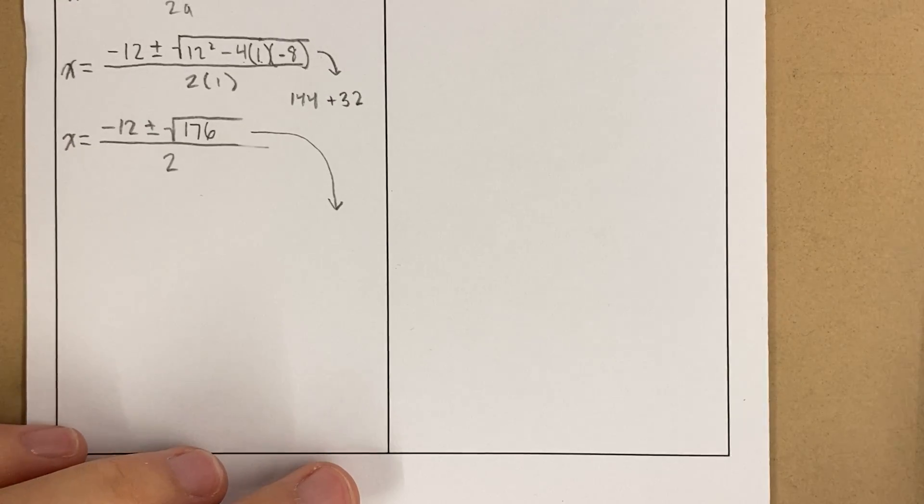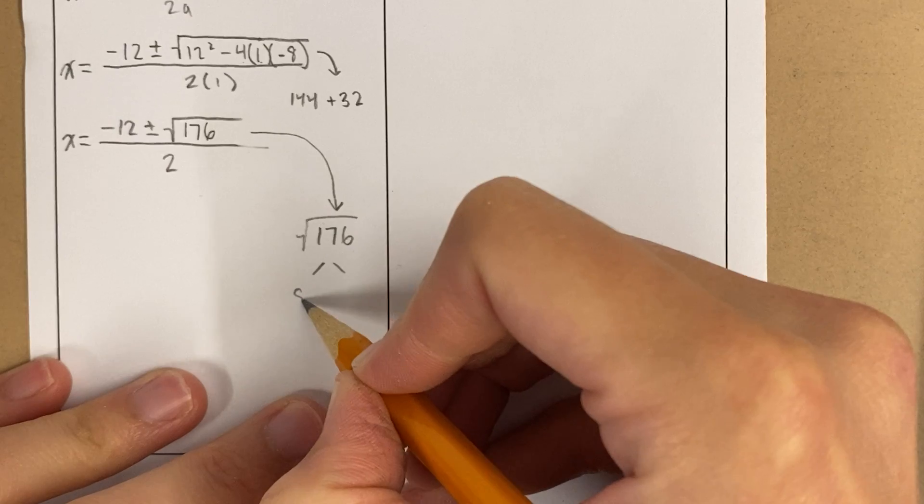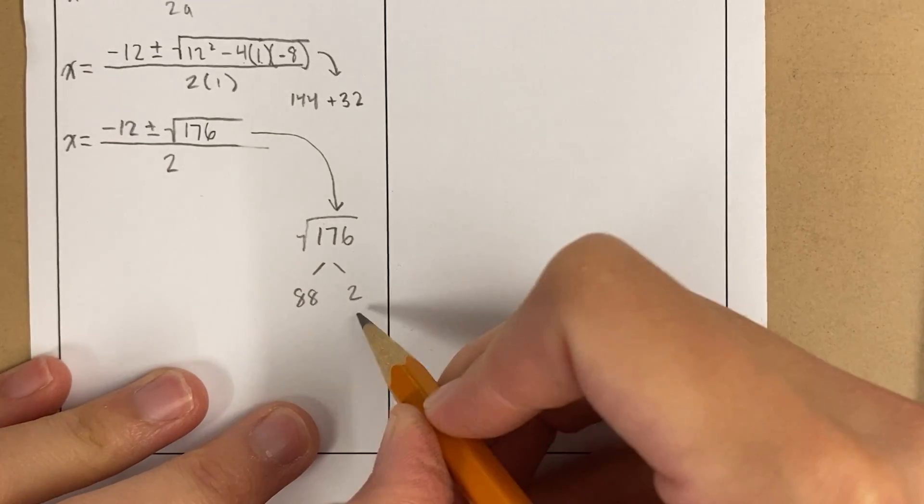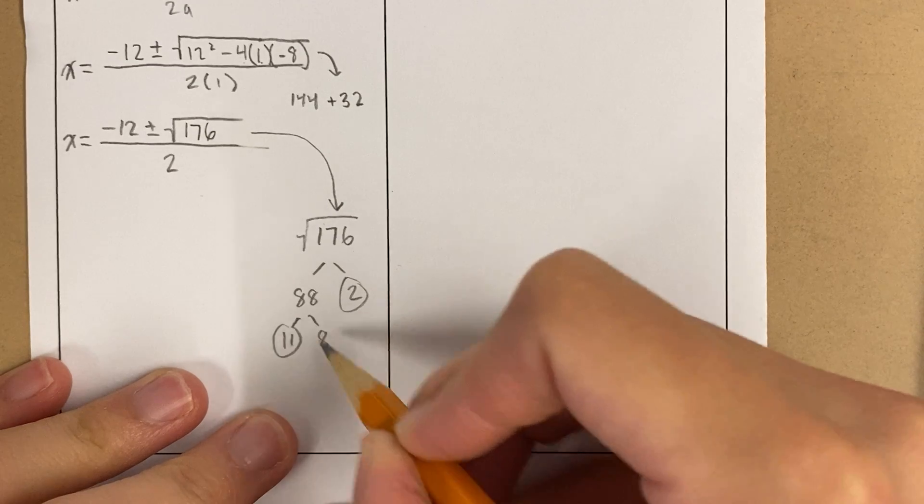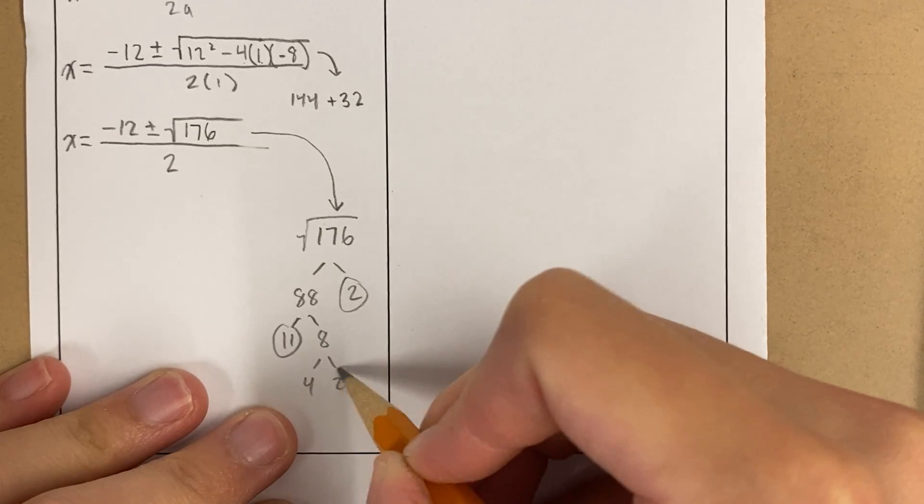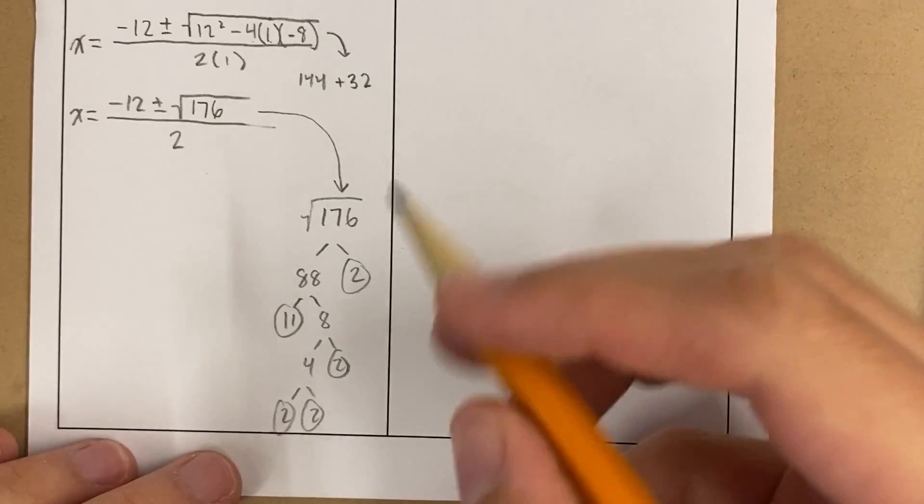Okay, now 176, I can just look at it. I see it's even, so it's divisible by 2. Okay, so I'm going to start like this. That's prime. I see 88. That's 8 and 11. 11 is prime. This is 4 and 2, and this is 2 and 2.